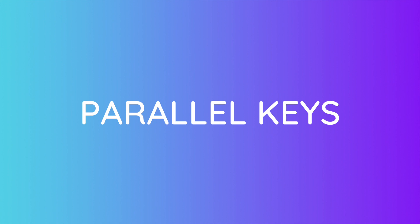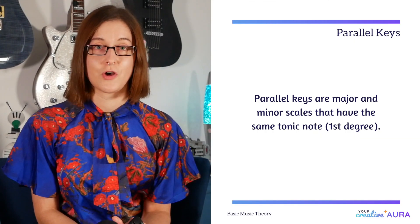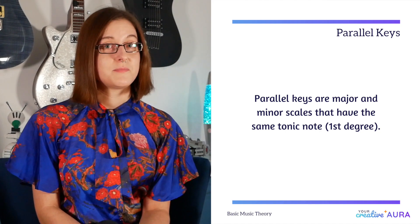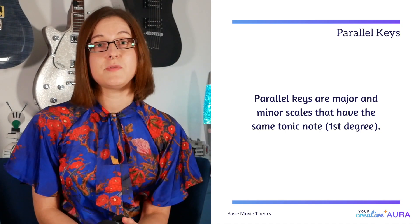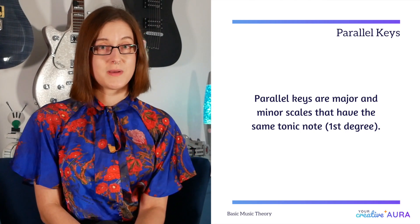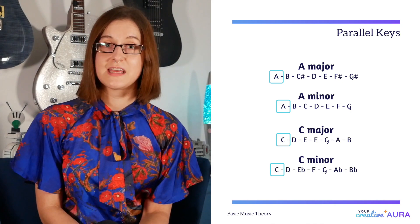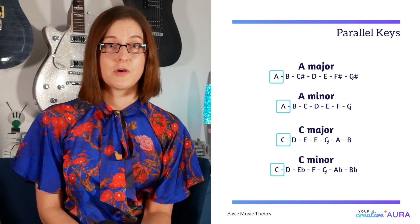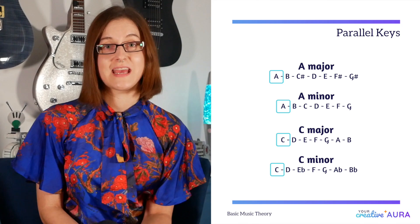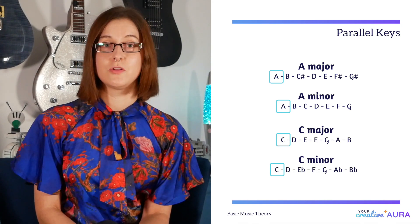Now parallel keys are major and minor scales that have the same tonic note. This means they both contain the same note at the beginning of the scale. So here we have two examples: the major and minor scale starting at A, and we also have it starting at C as well. They both have the same tonic note.